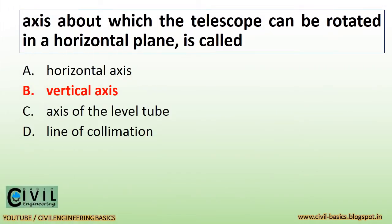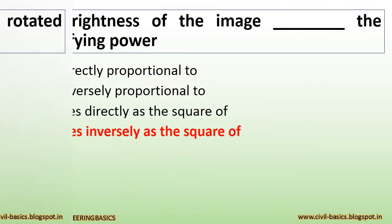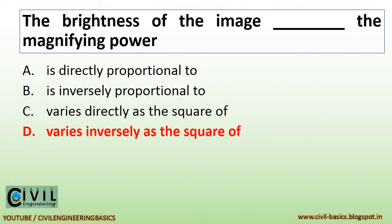The axis about which the telescope can be rotated in a horizontal plane is called vertical axis. The brightness of the image varies inversely as the square of the magnifying power.